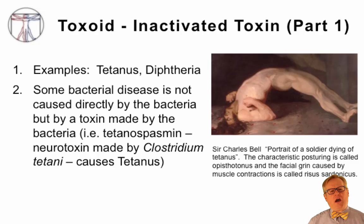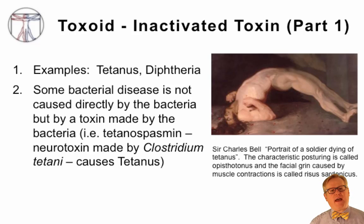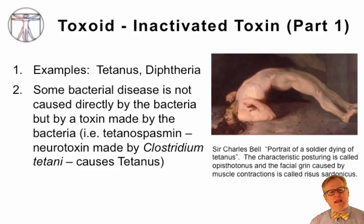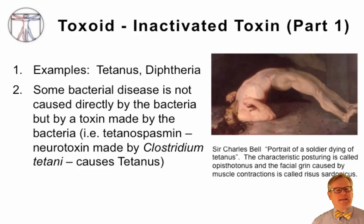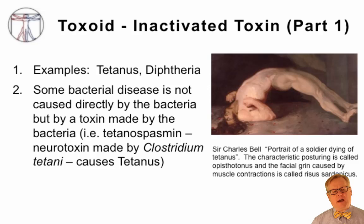The second type of vaccine are toxoid vaccines, in which the toxin is inactivated and used as the vaccine antigen. Examples are the tetanus vaccine and the diphtheria vaccine. Some bacterial diseases are not caused directly by the bacteria themselves, but by the toxin the bacteria make. The classic example is the tetanospasmin toxin, a neurotoxin made by Clostridium tetani that causes the disease tetanus.